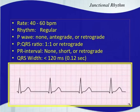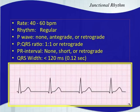Let's talk about the first rhythm: the junctional escape rhythm, often just called a junctional rhythm. The rate should be about 40 to 60 beats per minute because the AV junction has an intrinsic rate of 40 to 60.